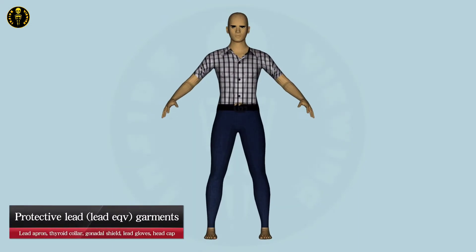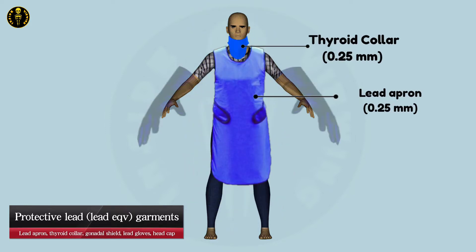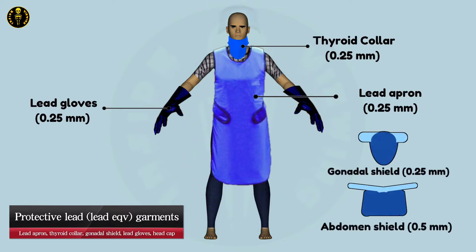Most commonly used protective lead garments in medical facilities are lead apron, thyroid collar, lead gloves, gonadal shield, and head cover.